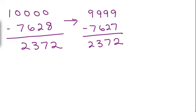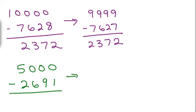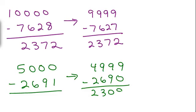You could also do this if they aren't just a 1 in front, you could do it for like 5,000 minus something as well. So let's say I took 5,000 minus 2691 and I could subtract 1 from each of these, again, making this 4999 and subtract 1 here. That makes it 2690. And then the subtraction becomes pretty simple. 4 minus 2 is 2309.